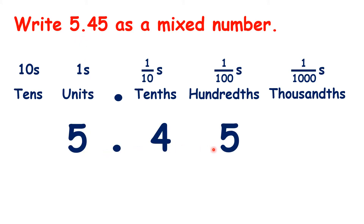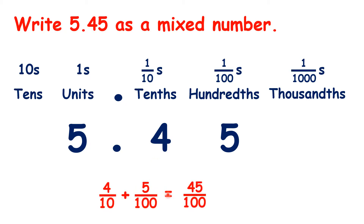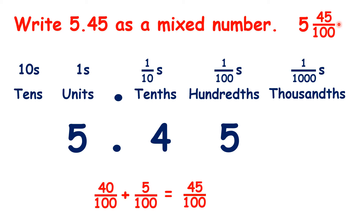Here's where it gets more difficult. If we have 5.45, we have 5 units, 4 tenths, and 5 hundredths. But with a mixed number, we can only have one fraction with one denominator. Here's where understanding equivalent fractions helps us. 4 tenths plus 5 hundredths is the same as 45 hundredths. That's because with our 4 tenths, we can multiply both the numerator and denominator by 10 to make an equivalent fraction of 40 hundredths. And then 40 hundredths plus 5 hundredths is 45 hundredths. So, our mixed number can be written as 5 and 45 hundredths.